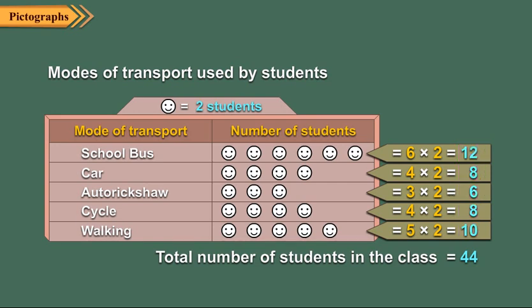Since the number of symbols against car and cycle is same, by just looking at the pictograph without calculating, you can say that the number of students using car and cycle is same.